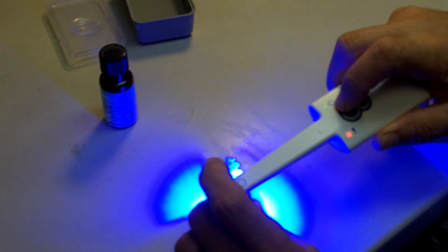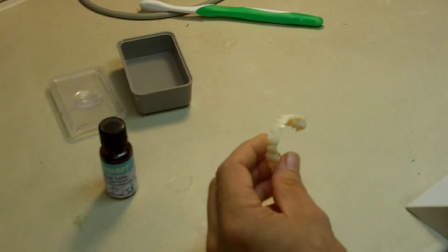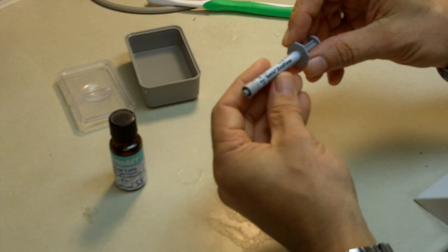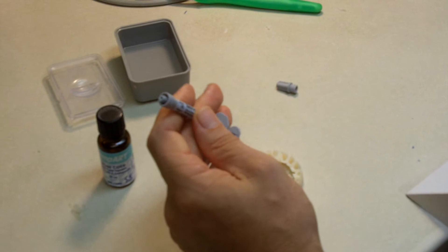And then I'm going to add the flowable composite of choice. In this case, it's going to be some Tetric EvoFlow XL, and it's white. The color is extra light.